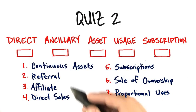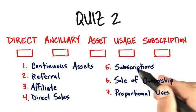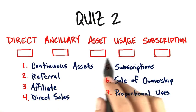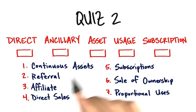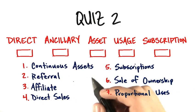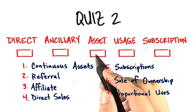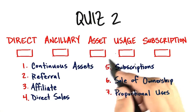Why don't we match the best examples that go in each box? Put the number that corresponds to what you think the best examples are in the boxes underneath the revenue stream examples on the top.